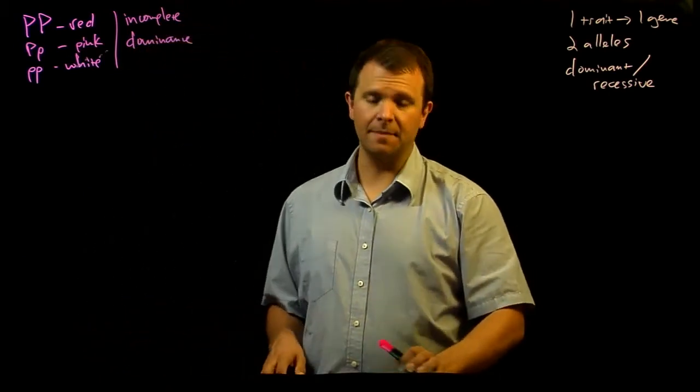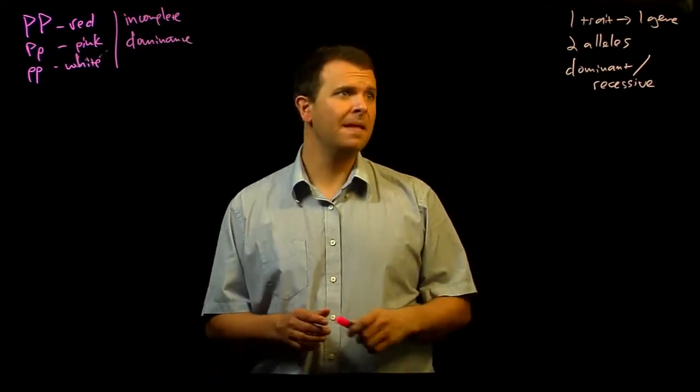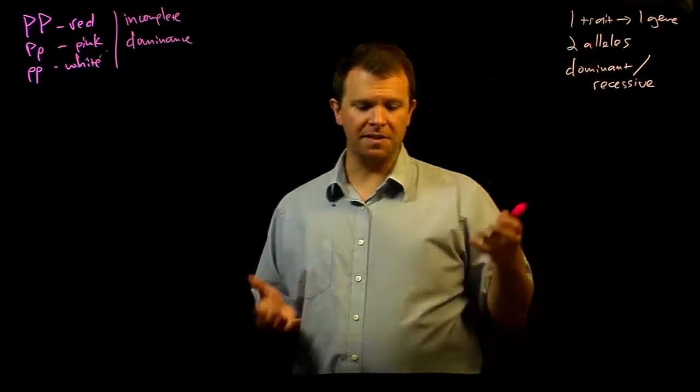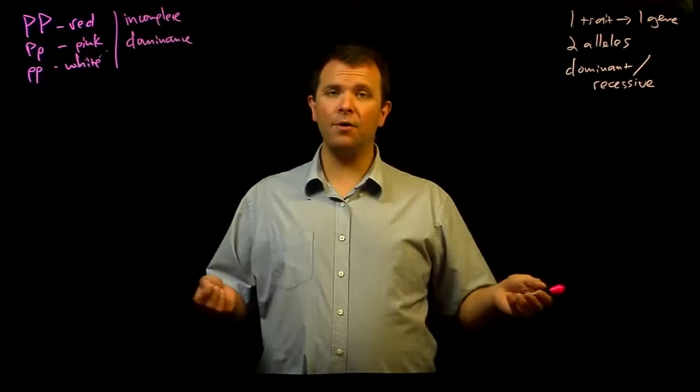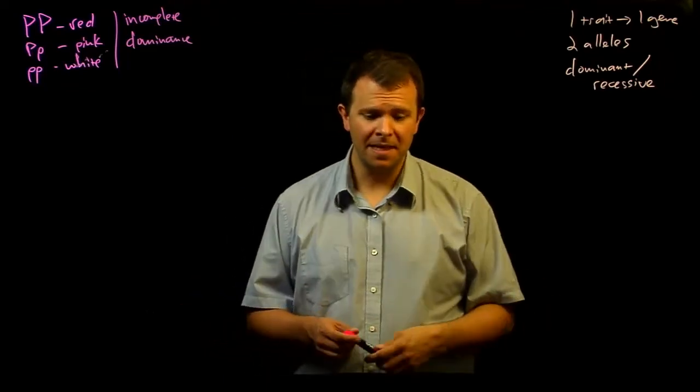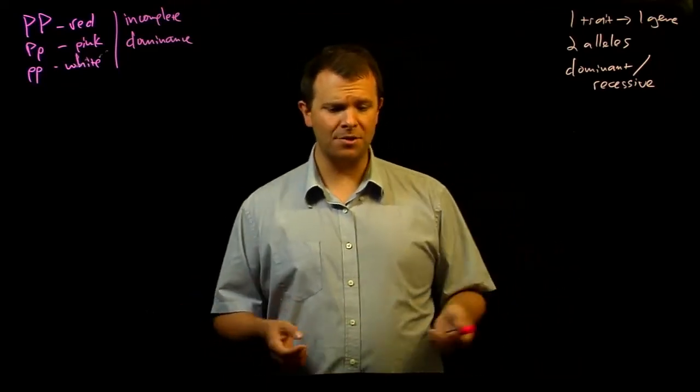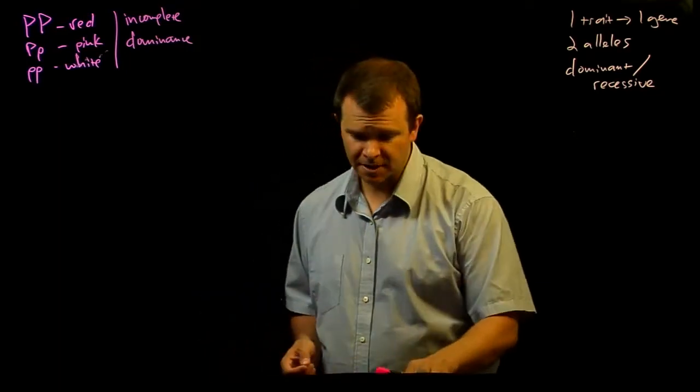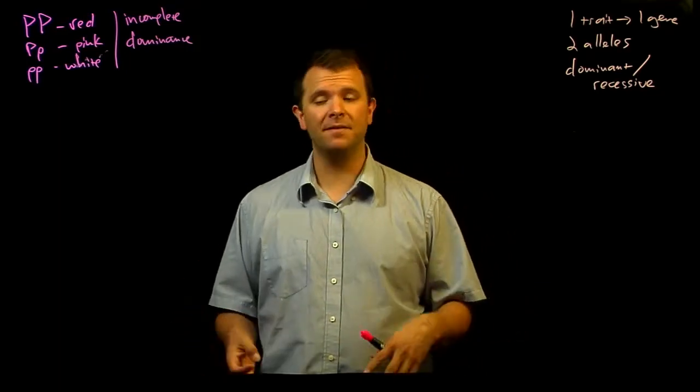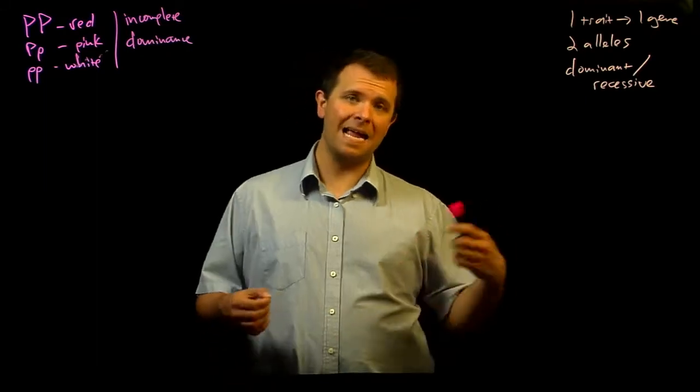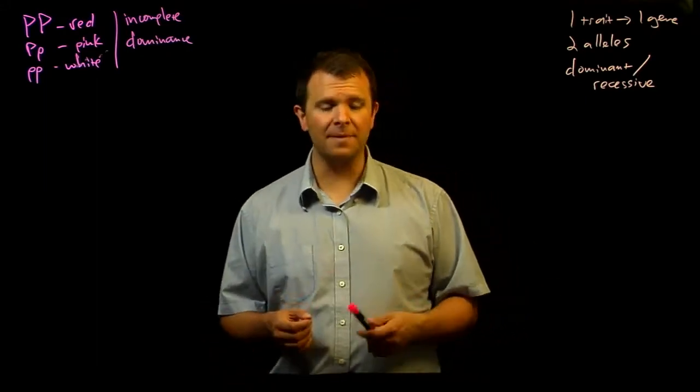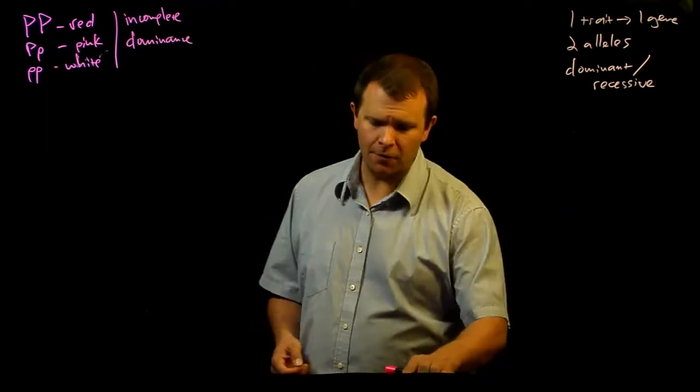The other assumption that is routinely broken is that there are only two alleles per gene. And we know from our discussion of polymorphisms that there are often more than two alleles at a particular locus, and the most famous example of this in humans is the ABO locus, which determines whether your blood type is A or B or O.